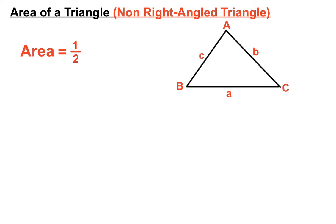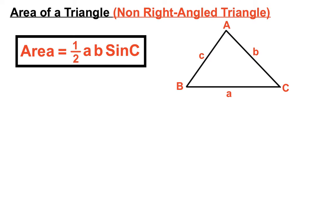The area formula for a non-right-angle triangle is half a times b times sine c. Here, a and b are side lengths and c is an angle. So this is the fancy trigonometry formula for the area of a triangle and we can use it on a non-right-angle triangle.